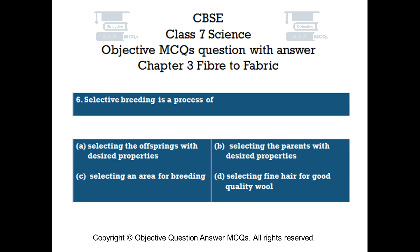Question number 6. Selective breeding is a process of: Option A Selecting the offspring with desired properties, Option B Selecting the parents with desired properties, Option C Selecting an area for breeding, Option D Selecting fine hair for good quality wool.